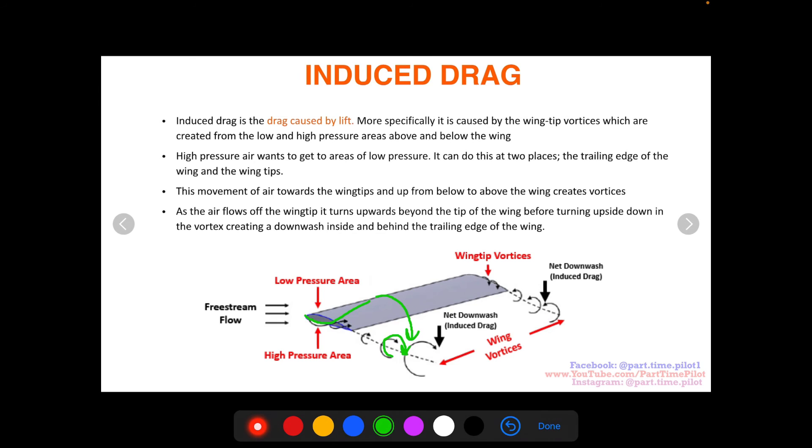All these vortices end up turning back down as the wing flows through the air. These vortices turning down create a net downwash—this is the induced drag. This downwash is almost like a weight or someone pulling on the back of the aircraft, pulling it down. This creates a form of drag which slows your aircraft and is against the forward movement of your aircraft.